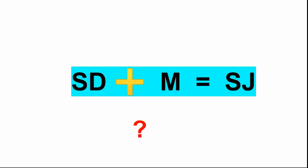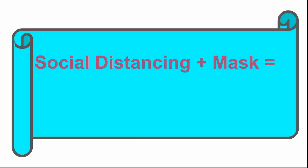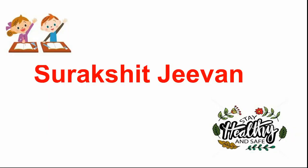A new thought — from KBC, Amitabh Bachchan asked: what is SD + M? The equation SD + M = SJ means Social Distancing plus Mask equals Surakshit Jeevan (safe life). Stay healthy, stay safe, study well, and read the chapter well. God bless you.